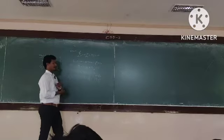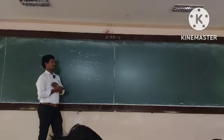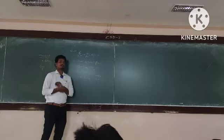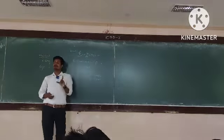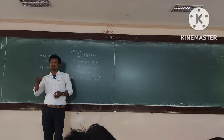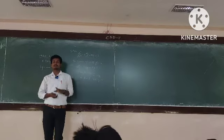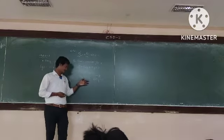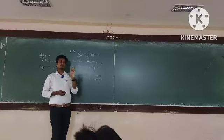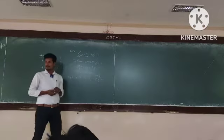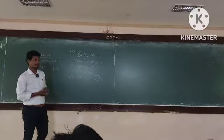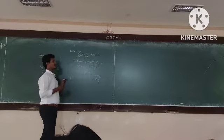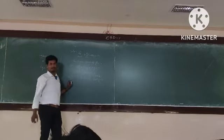Originally, higher order linear differential equation is f of d of y equal to q. When q is not 0, the general solution is y equal to yc plus yp. When q is 0, yp is 0. So the general solution is y equal to yc. yc is the complementary solution, which depends on the auxiliary equation.